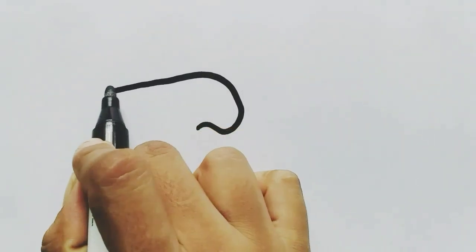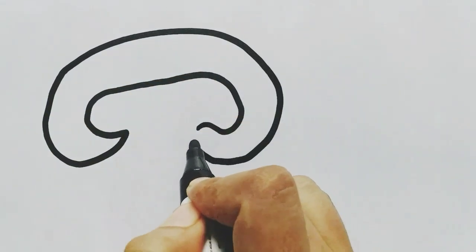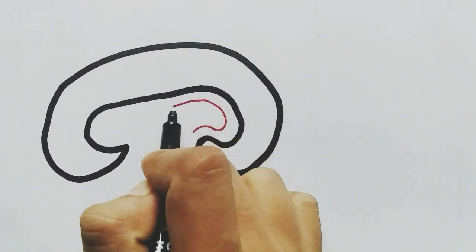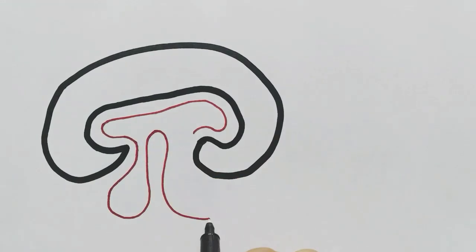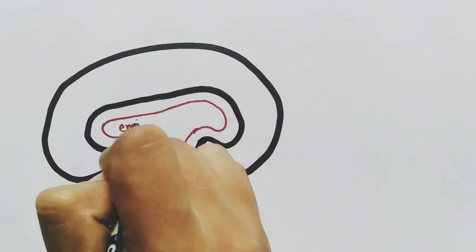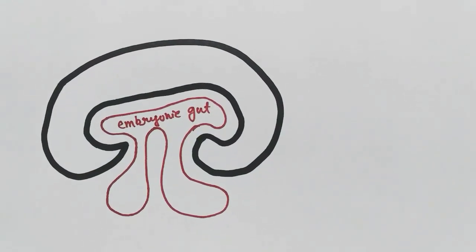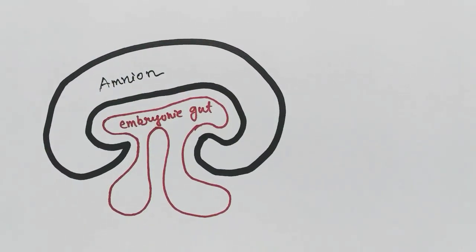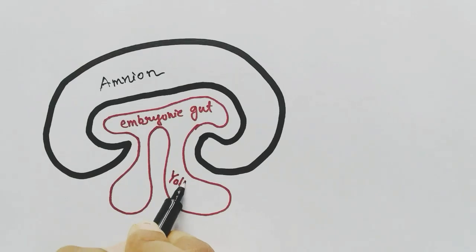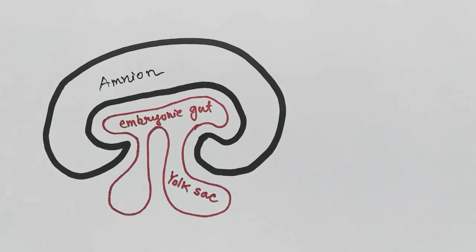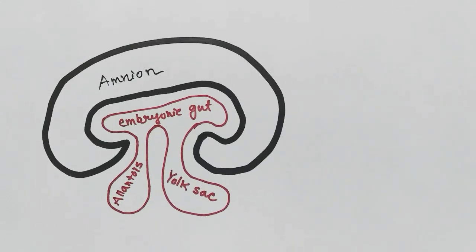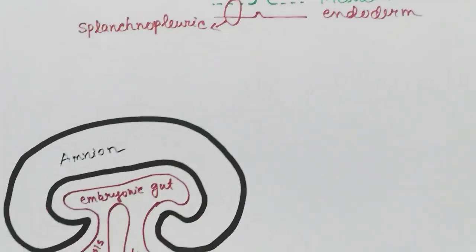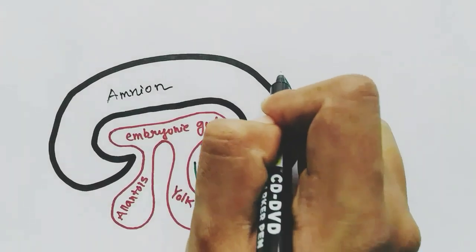Now, drawing the embryo: the black denotes the ectodermic layer and the red denotes the endodermic layer. The endoderm will form the embryonic gut, and also the yolk sac and allantois. The ectoderm will line the amnion. The somatopleuric mesoderm is the upper mesodermic layer associated with the ectoderm.